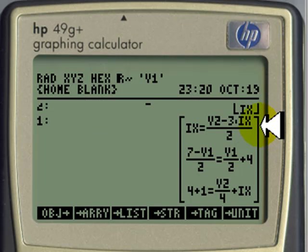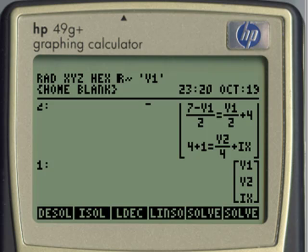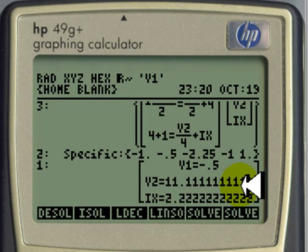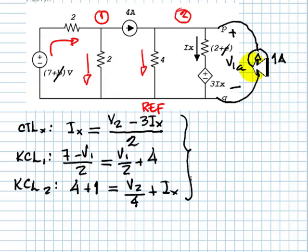The system of equations has the control equation, KCL 1 and KCL 2. We can solve for that with a linear solver and we have that V2 is 11.1 periodic volts and V2 is just V1A. V1A is 11.1 periodic volts.